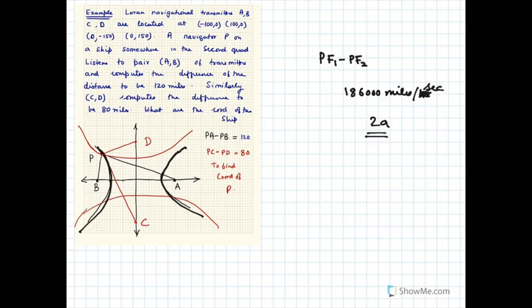With two pairs of transmitters, the position of your ship can be determined at the point of intersection of the two hyperbolas. As you can see in this diagram, there are two hyperbolas — one shown in black and the other shown in red.